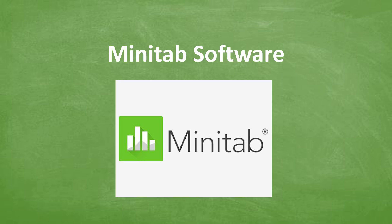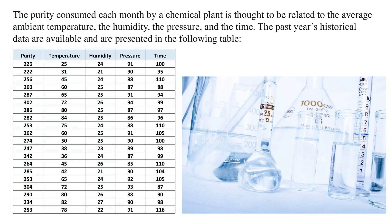Minitab streamlines statistical analysis, making it accessible for professionals to perform complex regressions and gain insights. The purity consumed each month by a chemical plant is thought to be related to the average ambient temperature, the humidity, the pressure, and the time. The past year's historical data are available and are presented in the following table.